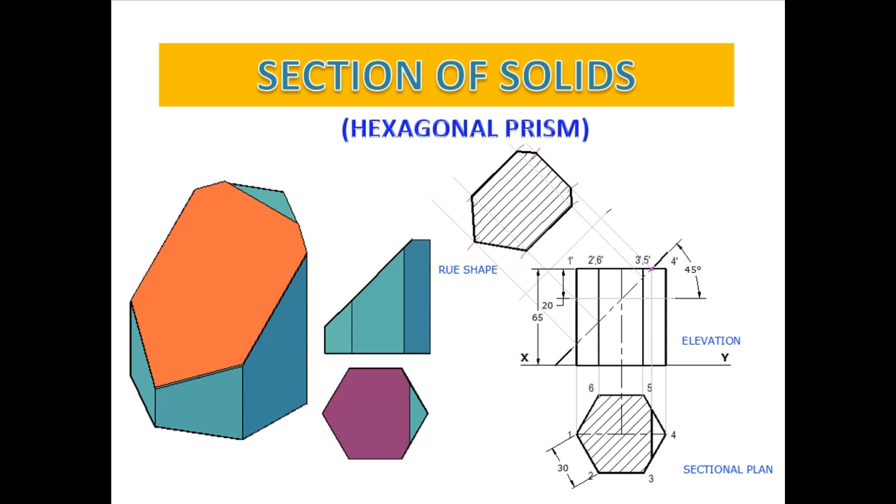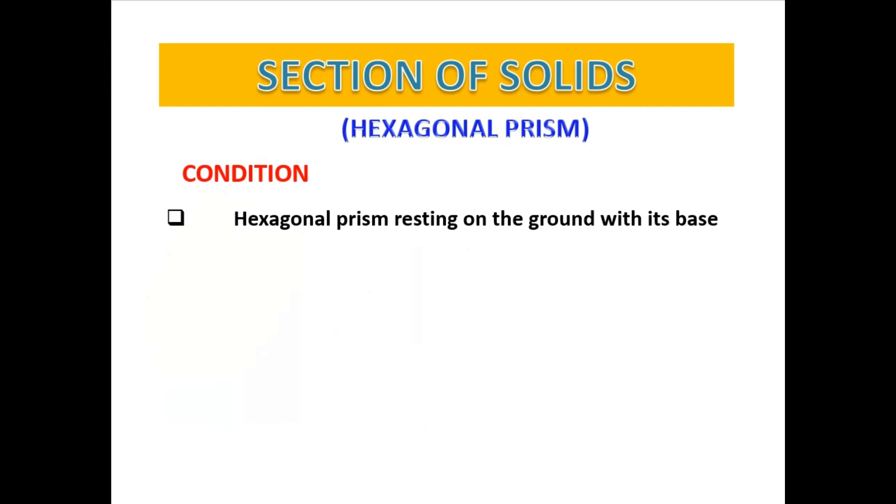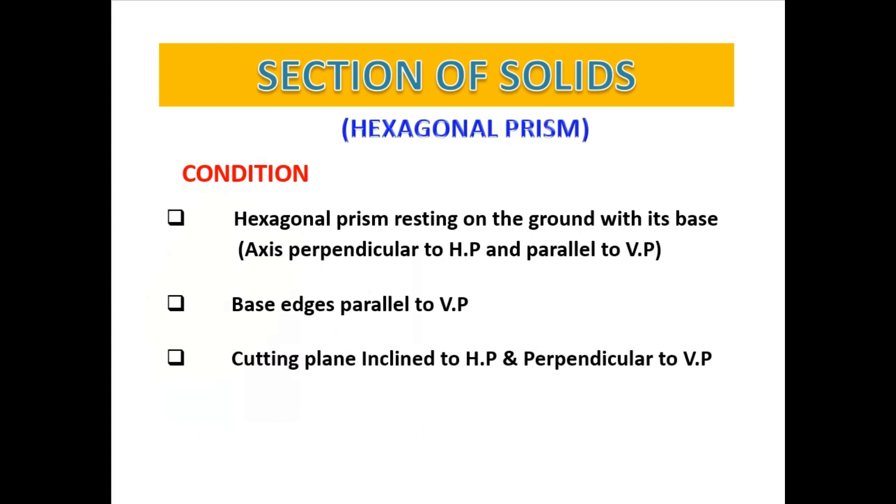Conditions of the solid: Hexagonal prism is resting on the ground with its base. That is, axis of the prism is perpendicular to HP and parallel to VP. At the same time, the base edges are parallel to VP, and the cutting plane is inclined to HP and perpendicular to VP.